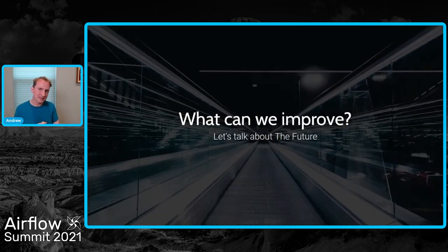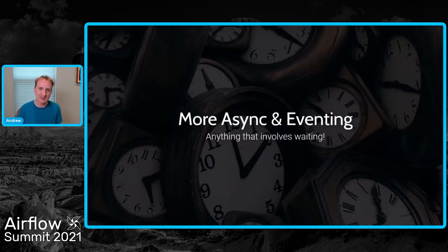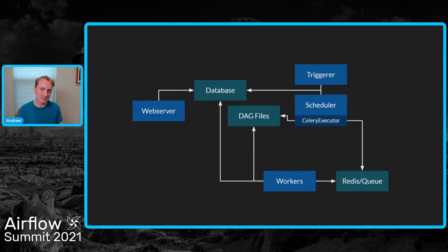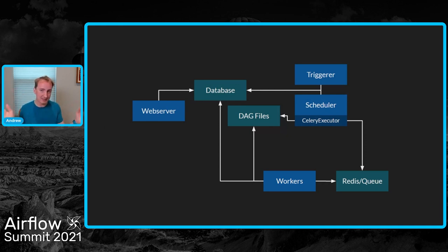Looking at things that might change in the future architecture-wise: more async and eventing. Anything that involves waiting for something to happen should probably be async because it saves a lot of resources in your cluster. AIP40 is the first part of this, with further plans like event-based DAG triggering. The trade-off is I add another box to the diagram - there's now a trigger process that runs all the async stuff - but it is highly available, so that guarantee of everything being HA still applies.